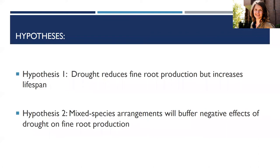With this background in mind, I tested two hypotheses. The first: drought reduces fine root production but will increase root lifespan, with the rationale that the tree will have limited carbon resources to build more roots, but the fine roots already there will live longer to compensate. My second hypothesis was that mixed species arrangements will buffer the negative effect of droughts on fine root production.